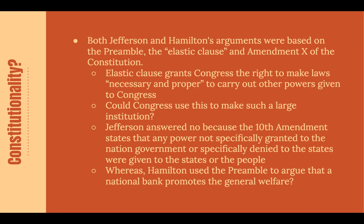Jefferson said no. He did not think Congress had the right to create such a large institution because the Tenth Amendment states that any power not specifically granted to the national government or specifically denied to the states is given to the states or the people. That's why he thought the institution of a bank automatically defaults to the states, because that power is not explicitly given to the national government and not explicitly denied to the state government. Hamilton also used the preamble to argue that a national bank would promote the general welfare and help establish a more perfect union.